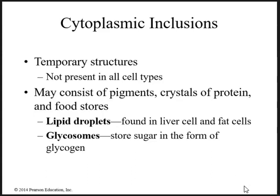We also have glycosomes, which help store sugar in the form of glycogen. Glucose is very important to help us perform certain functions, and the stored form of glucose is known as glycogen.